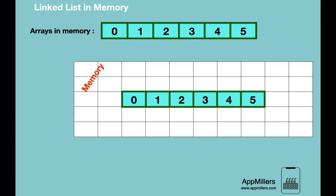In this video, we are going to learn how linked lists are stored in memory. In the arrays section, we learned that elements of an array are stored contiguously in memory — they are next to each other. We know the exact location of cells, so accessing them becomes easier. Now let's see how linked lists are represented in memory.